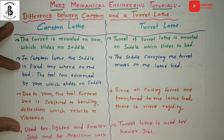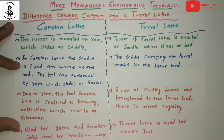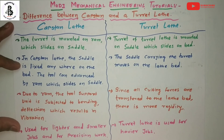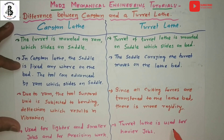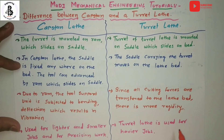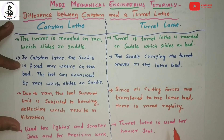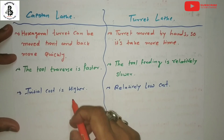Next, the capstan lathe is used for lighter and smaller jobs requiring precision work, giving higher productivity with high quality output. The turret lathe is generally used for heavier jobs, which reduces the precision and acceptance numbers.